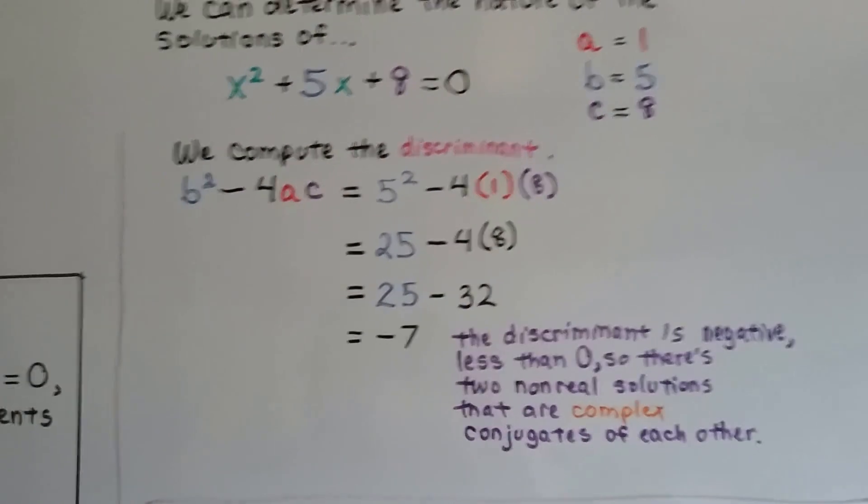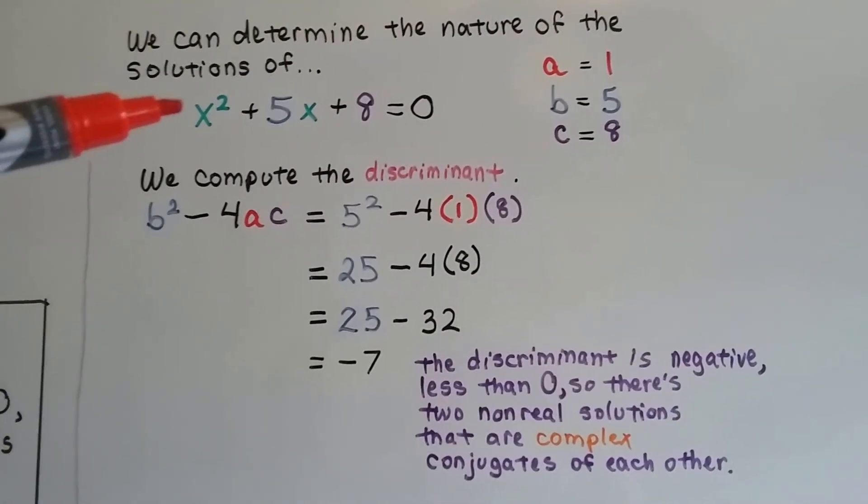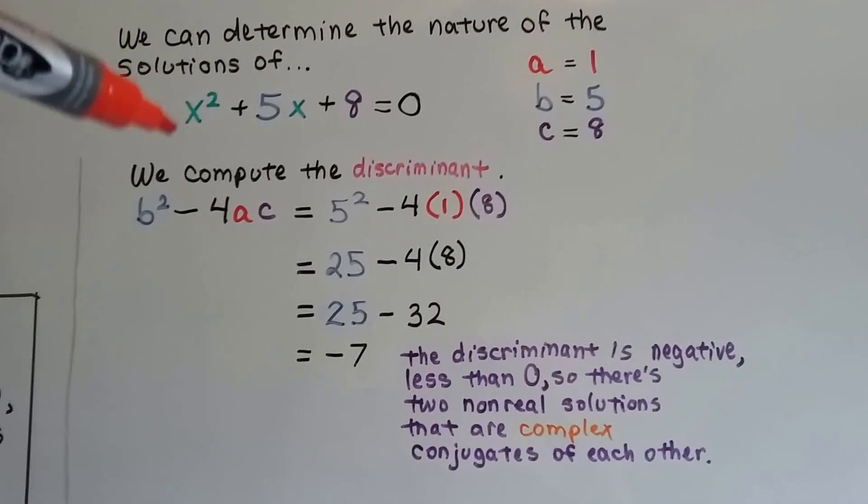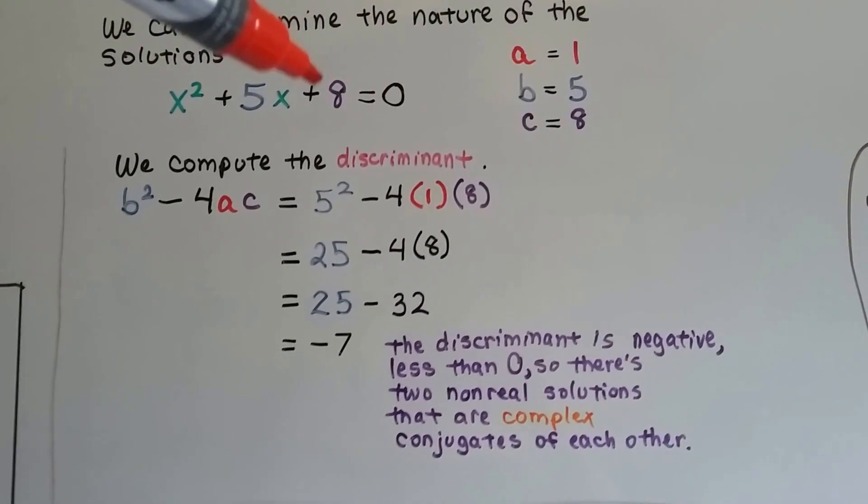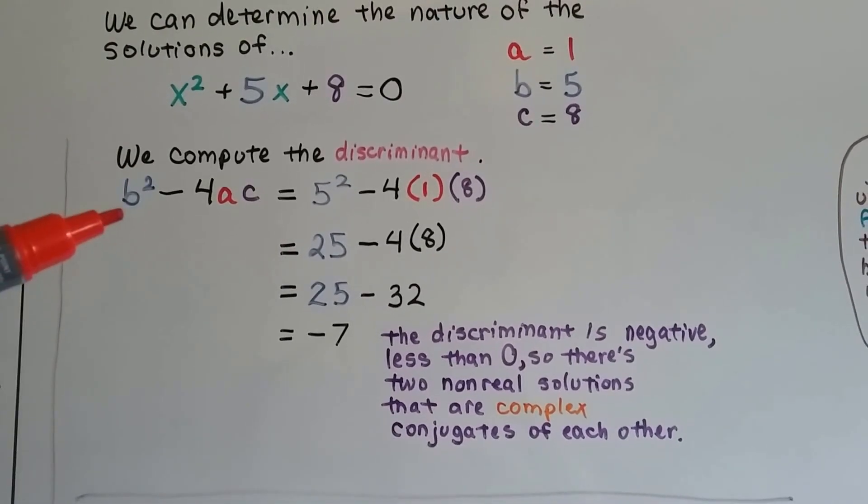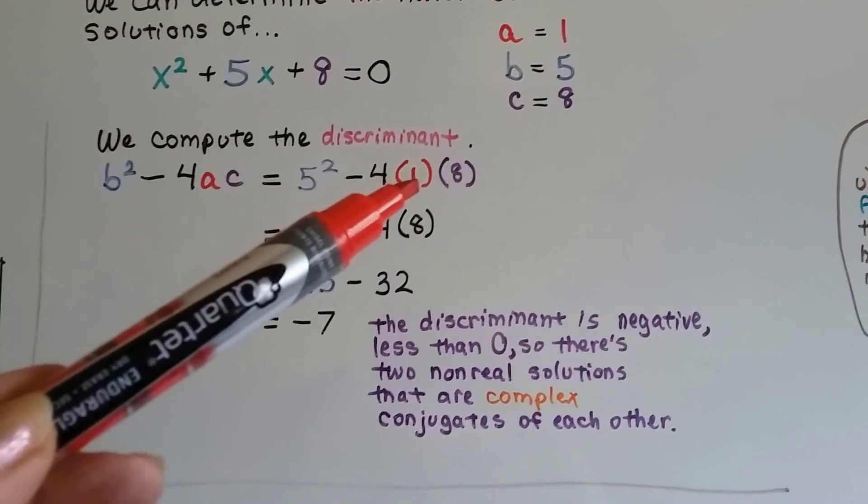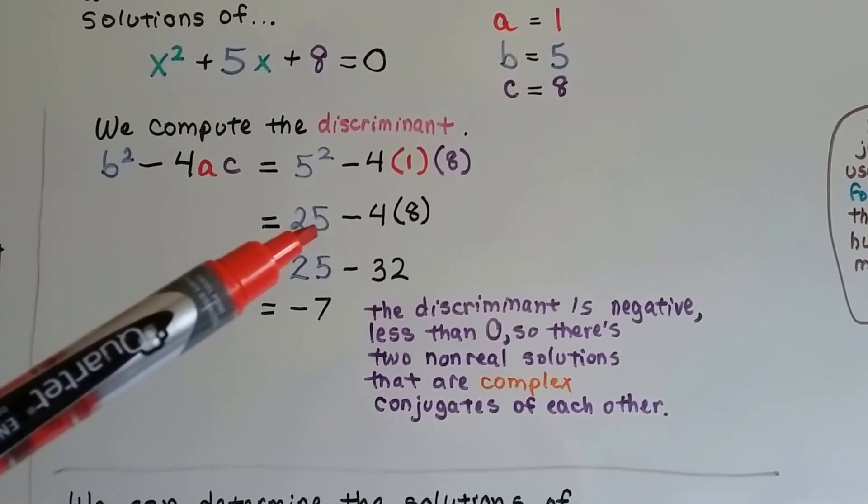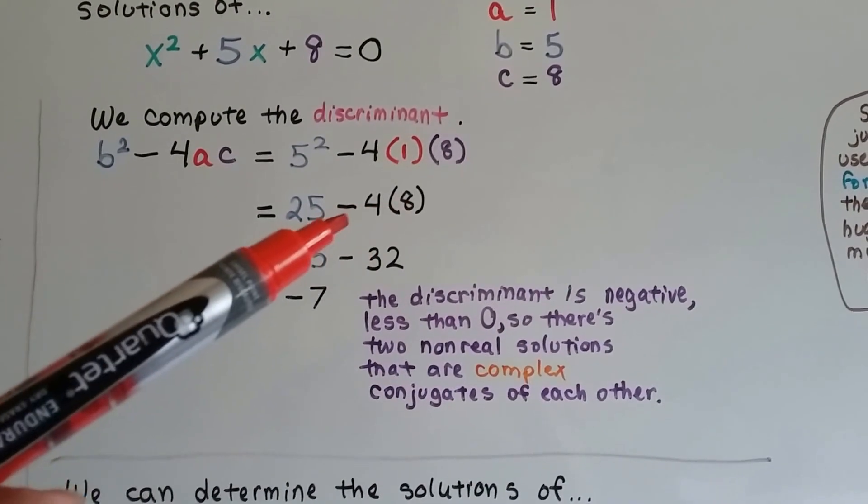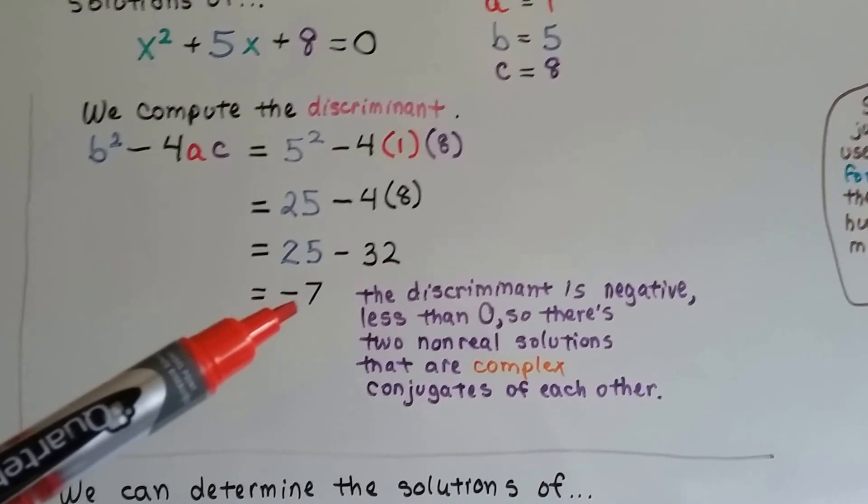We can determine the nature of the solutions of this one. And you can see it's in standard form. We have got a 1 now, an invisible 1 here for a, don't we? And b is a 5 and c is an 8. We compute the discriminant. We have b squared minus 4ac. So we have 5 squared minus 4 times 1 times 8. It's going to give us 25 minus 4 times 8, which is 32. 25 minus 32 is negative 7.